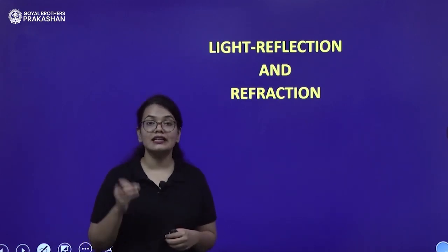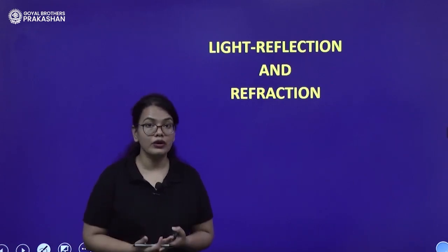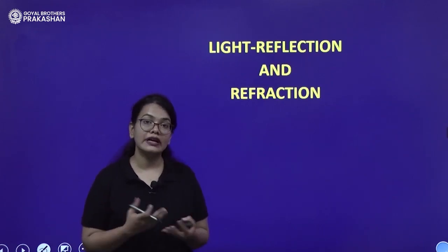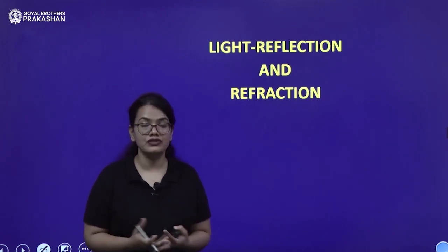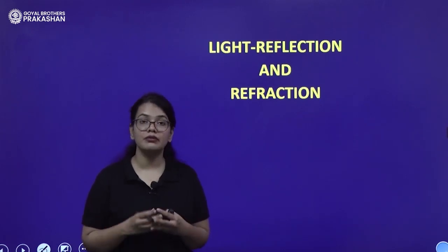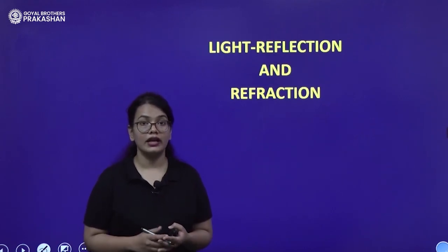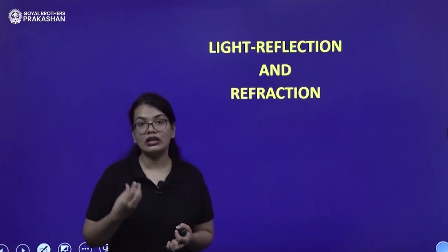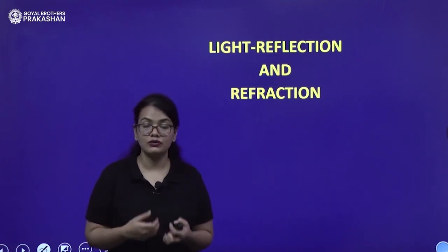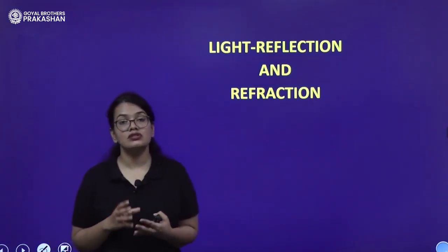Light plays a very important role in the daily viewing of objects. Suppose you enter a dark room where there is no light — neither sunlight nor any artificial light from bulbs or tube lights. In that scenario you won't be able to see what things are lying around in the room. Therefore light enables us to live our life to the fullest because we are able to see objects.